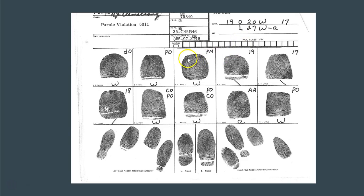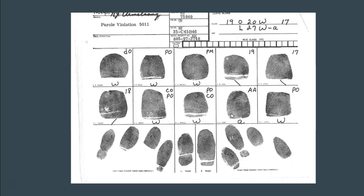Another example: with a primary of 20 over 27 showing lots of whorls, and both index fingers being whorls giving whorl over whorl for the secondary, we look to do the sub-secondary. But we see a small letter to the right of one of the index fingers, so we can't have a sub-secondary. Instead, we note its location — we can see there's at least one finger between the index finger and that small letter, indicated by a dash, and then the small letter A follows.